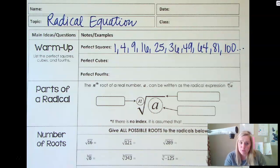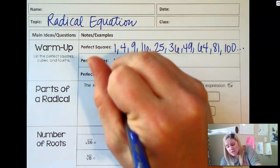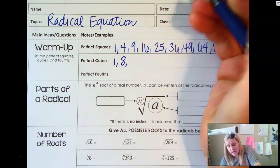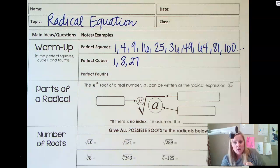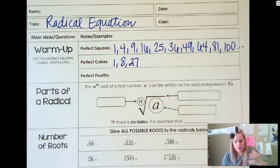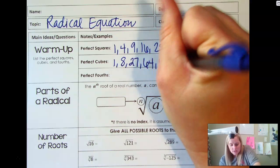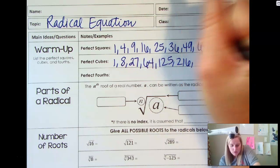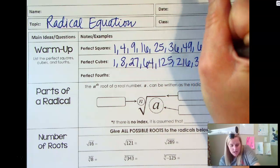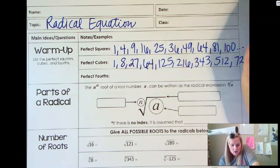Then we would have our cubes. Remember, cubes is to the third power. So 1 to the third power is 1, 2 to the third power is 8, 3 to the third power is 27. I don't have the other ones memorized, but I have my cheat sheet. So the next ones are 64, 125, 216, 343, 512, 729, and on and on.